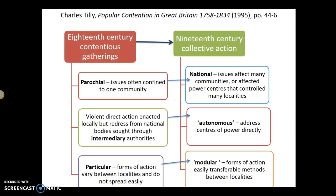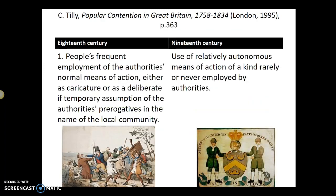You'll have seen this table before, but we'll quickly go through it in more detail. There's a shift between what he calls contentious gatherings in the 18th century towards collective action in the 19th century. Essentially, we're moving from local to national, from violent and intermediary to autonomous and less violent, and from particular or specific protests towards much more transferable types of protest. In the 18th century, he argues, people used caricature or temporarily assumed local authority sorts of ways of action. Can you think of any types of protests that did that?